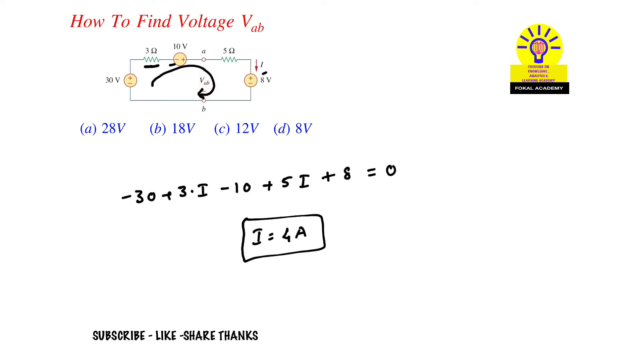For finding voltage V_AB, just consider these two elements in the circuit. So now apply loop here also.